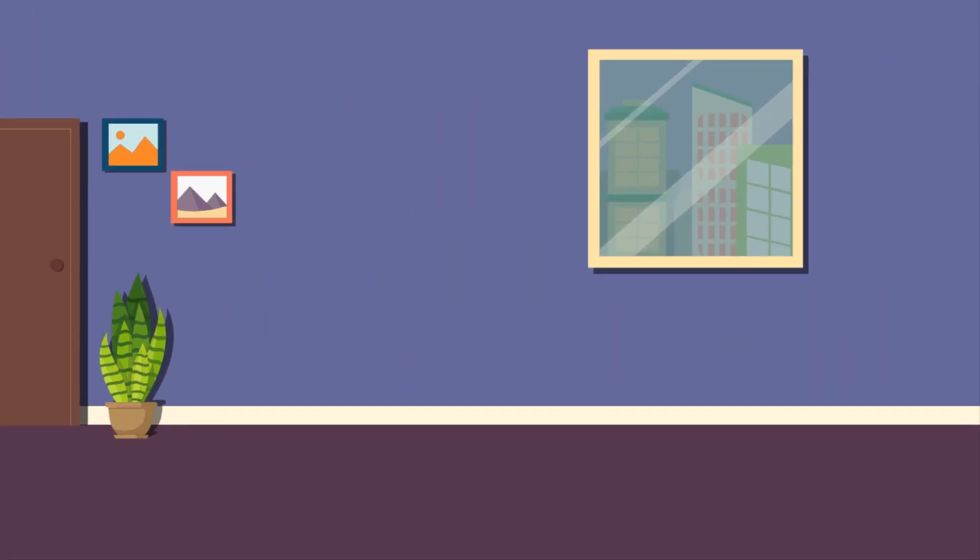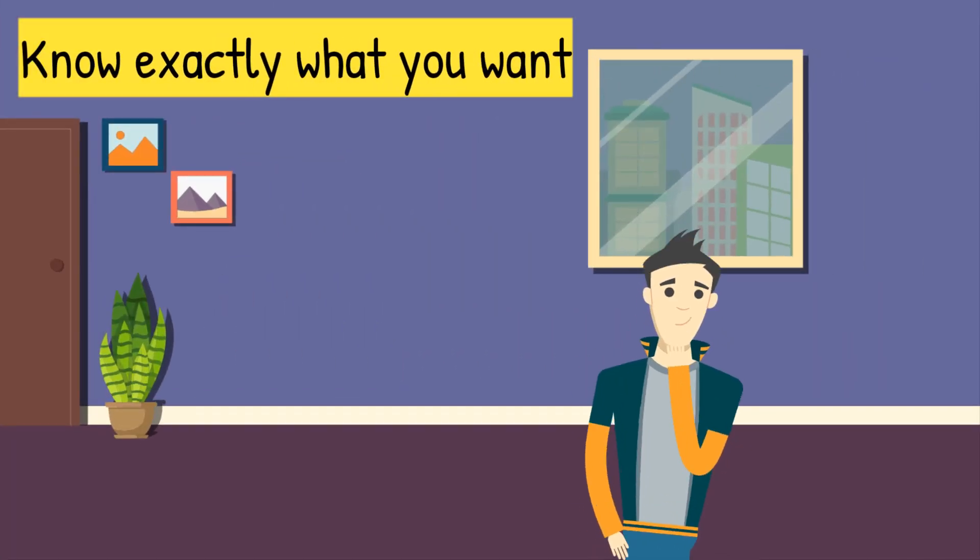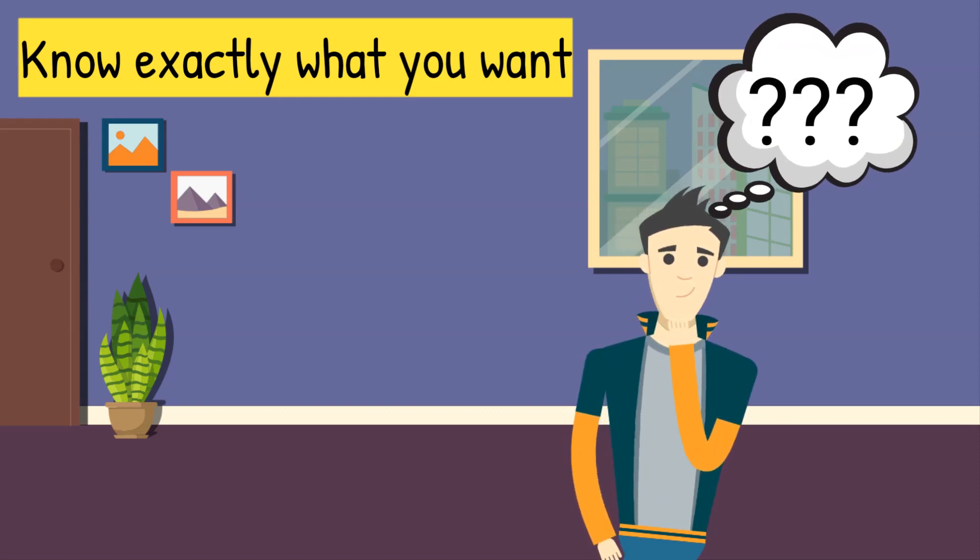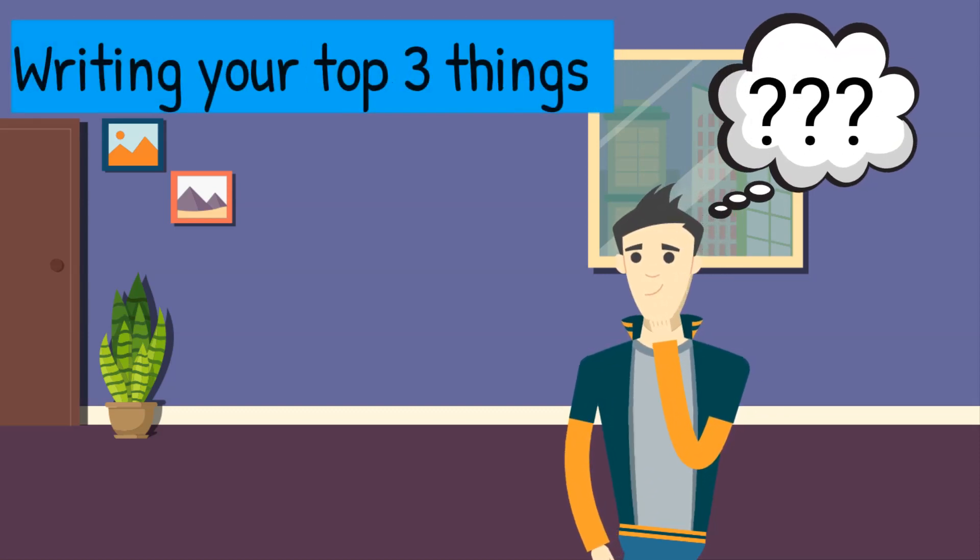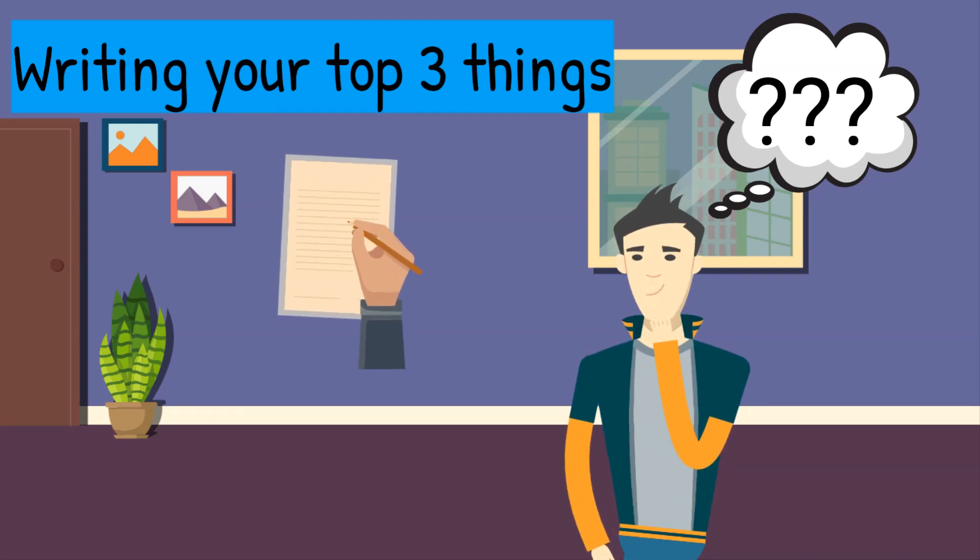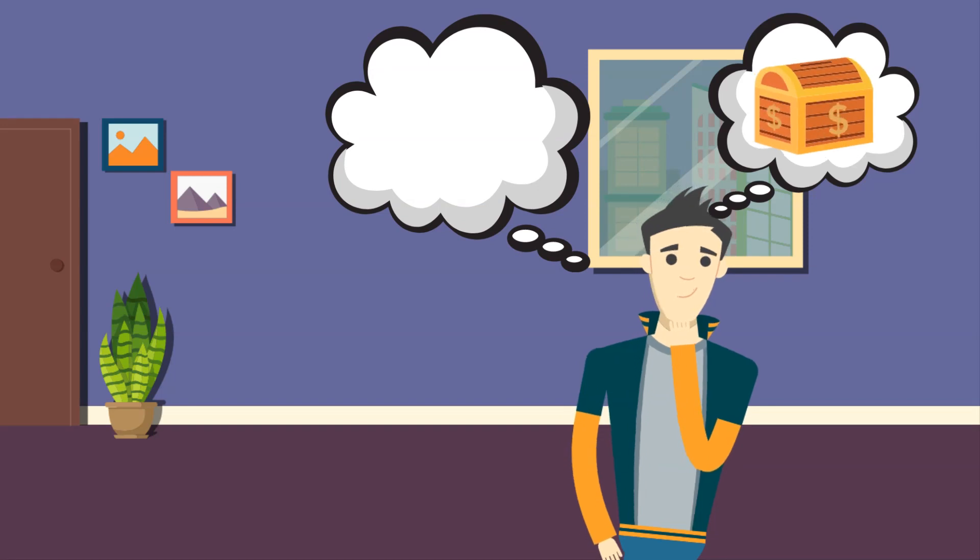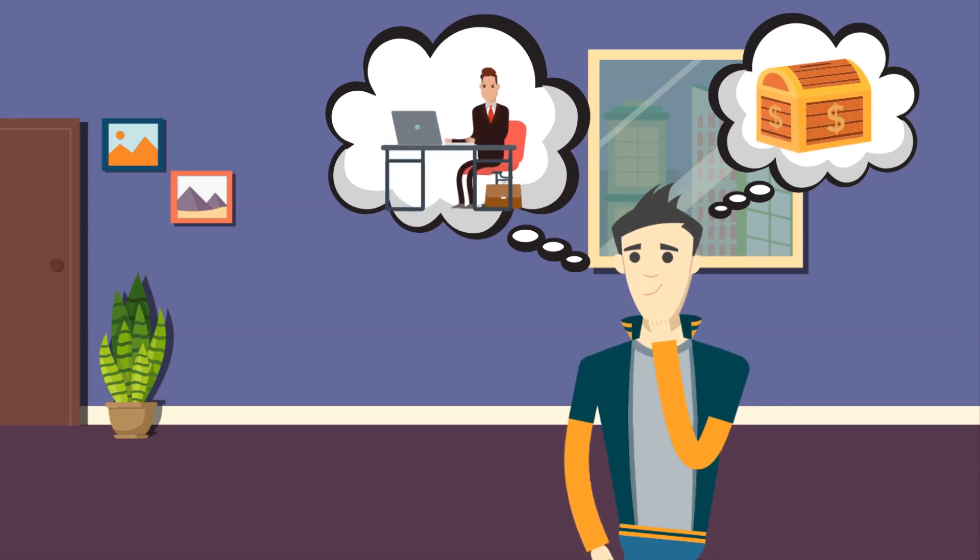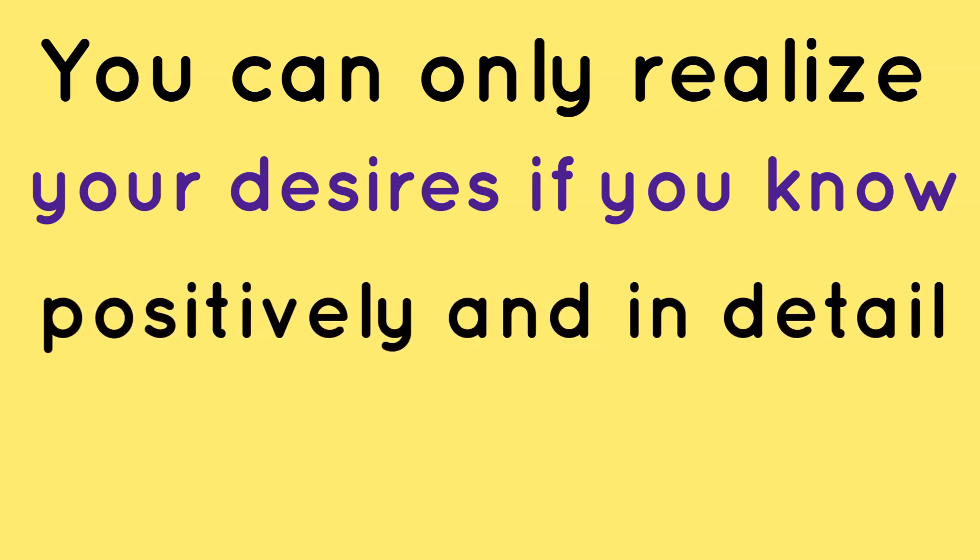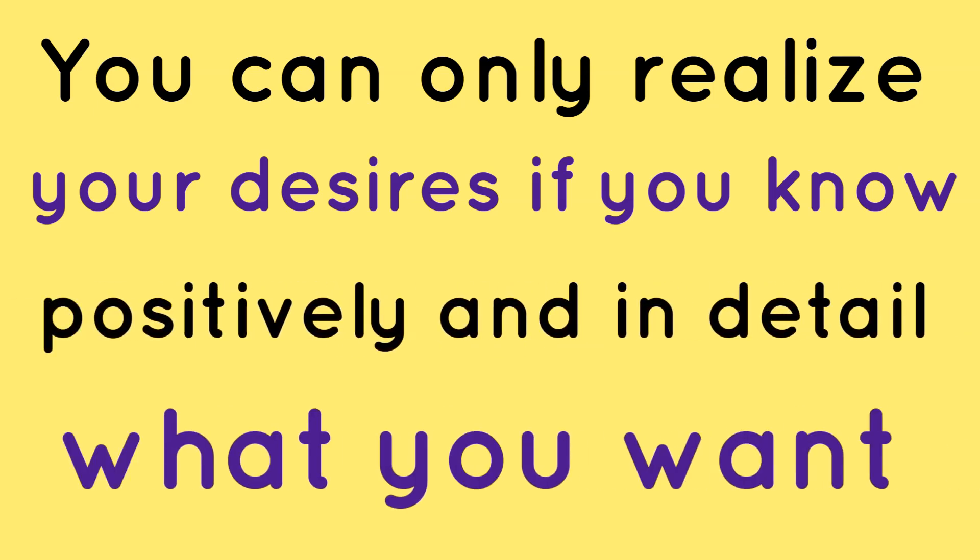The first step to visualize is to know exactly what you want. One of the best ways in which you can get clear about what you want is by writing on a sheet of paper your top three things that you really want in your life. Forget about your limitations and be very specific in your description. You can only realize your desires if you know positively and in detail what you want.